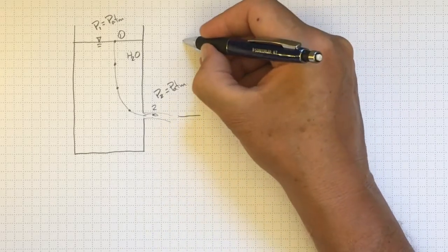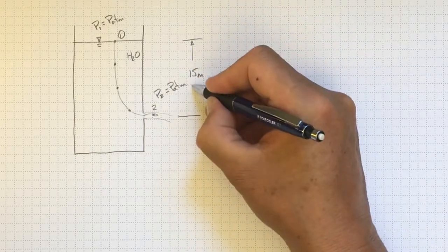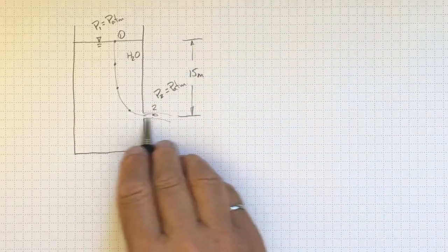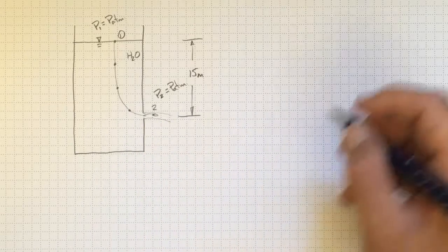If this elevation difference is 15 meters, then we'd like to know how fast the water is going to be going as it comes out the side of the tank. We can do that by applying Bernoulli's equation.